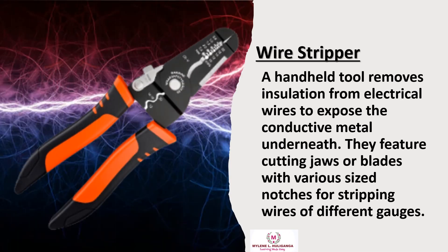First is the wire stripper, a handheld tool that removes insulation from electrical wires to expose the conductive metal underneath. They feature cutting jaws or blades with various sized notches for stripping wires of different gauges.